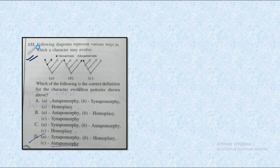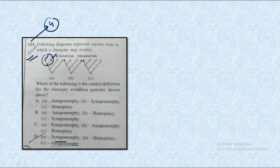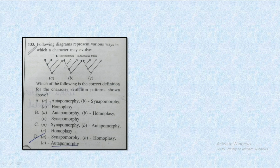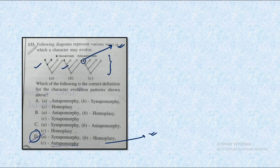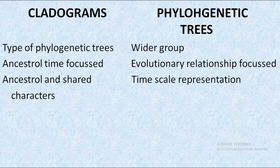A question has been asked related to these terms. Figures are given and applying the knowledge we just discussed, we can easily solve it for four marks. The first figure represents apomorphy, as the derived character is in descendants and recent ancestors. The second represents homoplasy, with characters shown in a set of species. The third represents autapomorphy, a unique character in only one descendant. So option D is the correct answer.